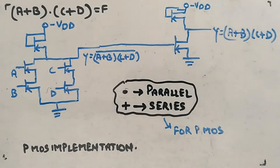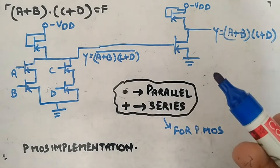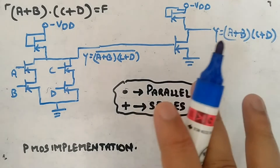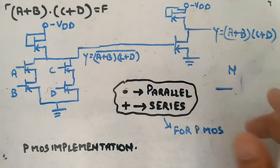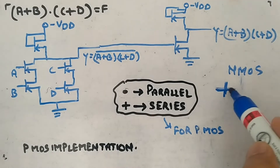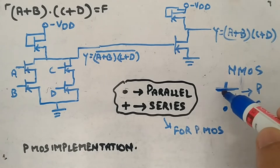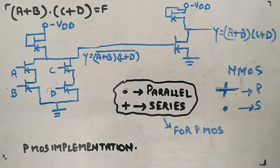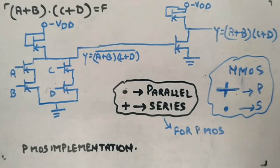If you find it confusing, just remember the NMOS rules and do the reverse for PMOS. For NMOS I remember: plus means parallel — I remember this because the plus symbol visually suggests parallel — and dot means series. That's all I remember. When I make for PMOS, I do the reverse. That's how you can remember it.